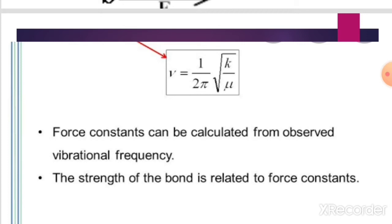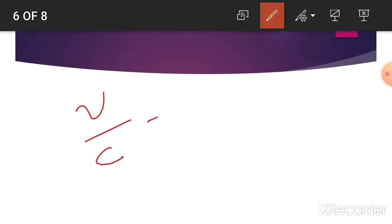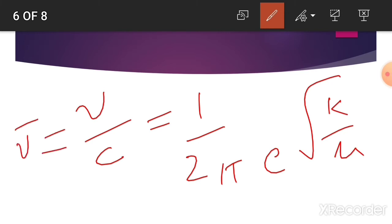This is the simple harmonic oscillator model which we use for vibrational spectroscopy of diatomic molecules. We can write nu upon c equals 1 upon 2 pi c under root of k by mu. For the simple harmonic oscillator model, the potential energy V(x) is equal to half kx square, where x is the delta x, the displacement from equilibrium.